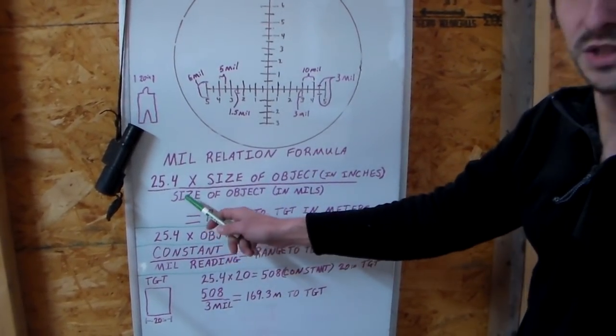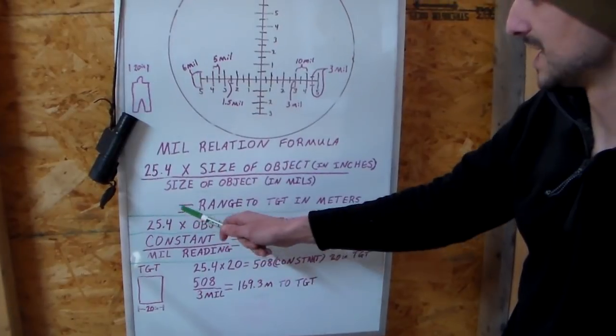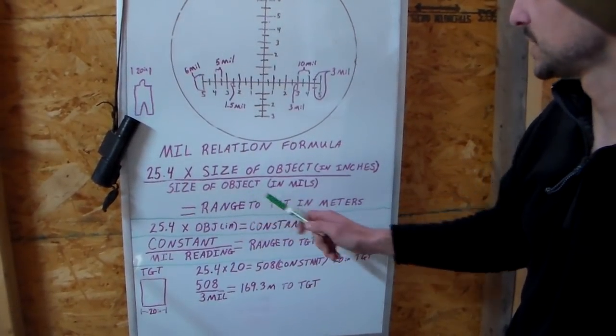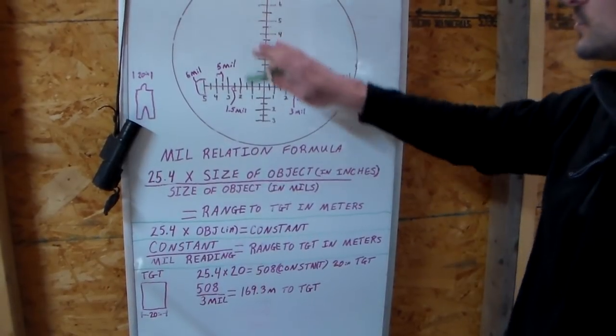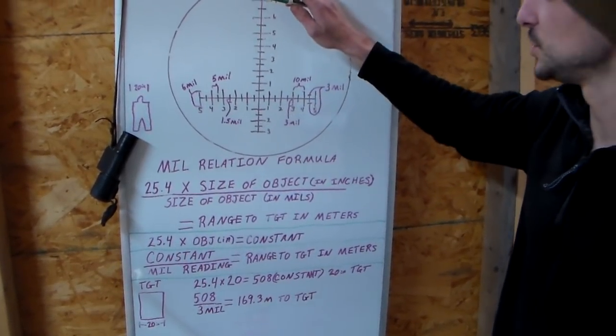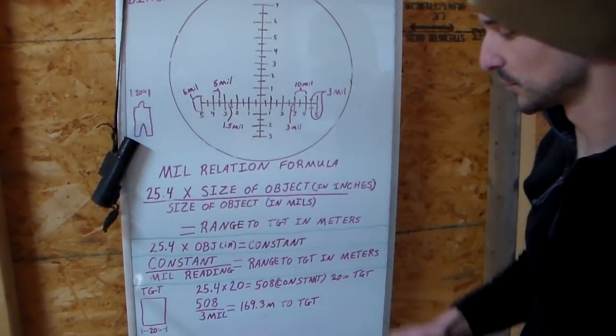So let's move on to the second half of this equation: size of the object in mils. This is where a reticle is going to come in, and this is where we have to use our reticle to mill the target.